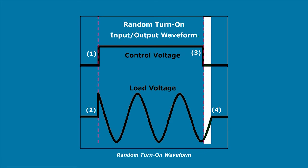Random Turn On is when the control circuit energizes the relay's output regardless of the value of the AC line voltage at the time of the turn-on command.